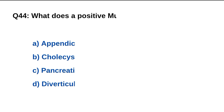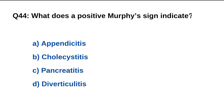Question number 44. What does a positive Murphy's sign indicate? The right option is B: Cholecystitis.